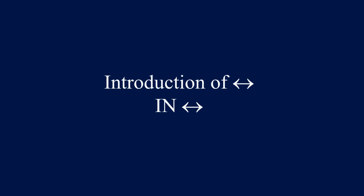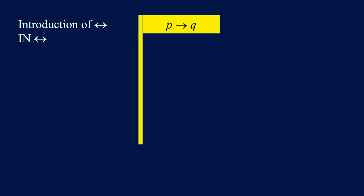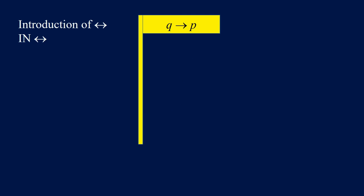Introduction of biconditional — we're going to use IN biconditional for reasoning. If we have P implies Q in the flag or under the flag, and we have Q implies P under the flag, then we can conclude P if and only if Q. Similarly, if we have Q implies P in the flag or under the flag, and we have P implies Q under the flag, then we can conclude P if and only if Q.